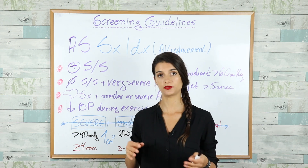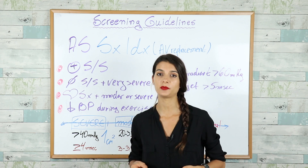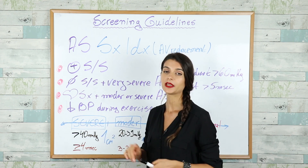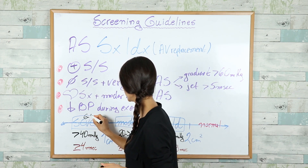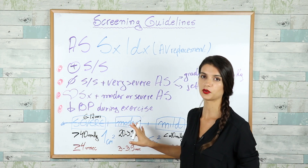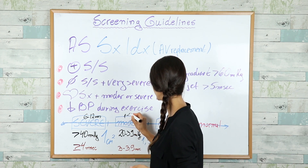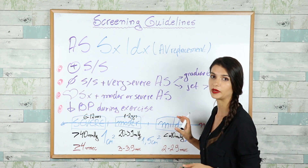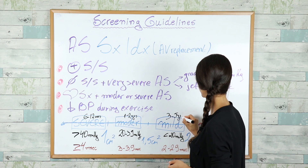Before discussing surgical indications for aortic stenosis — basically in which patients we have to replace the valve — let me explain how to manage asymptomatic patients. If the aortic stenosis is severe, repeat the echo every 6 to 12 months. In moderate aortic stenosis in asymptomatic patients, repeat the echo every 1 to 2 years. In mild aortic stenosis in asymptomatic patients, repeat the echo every 3 to 5 years.